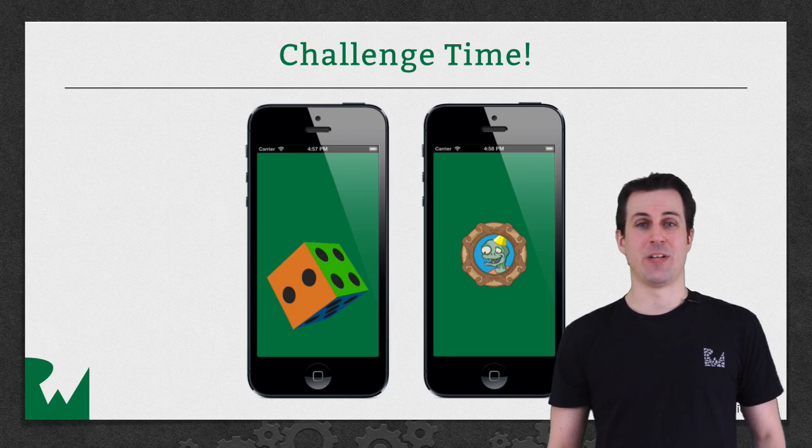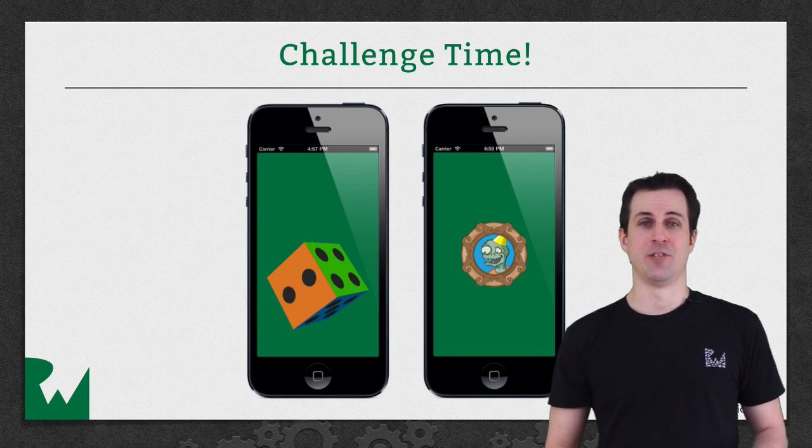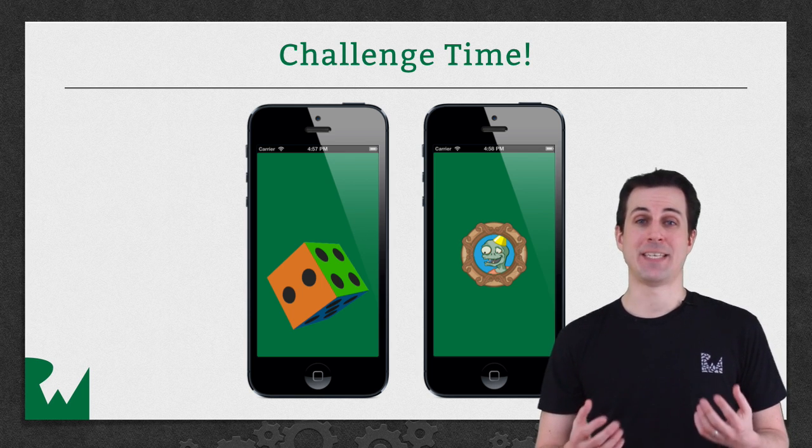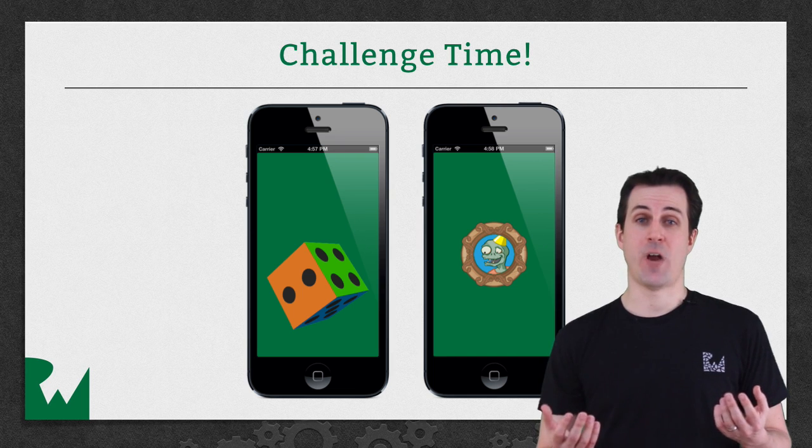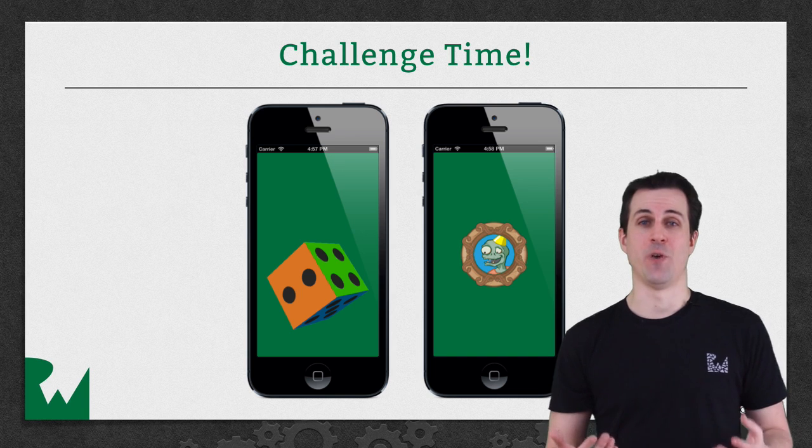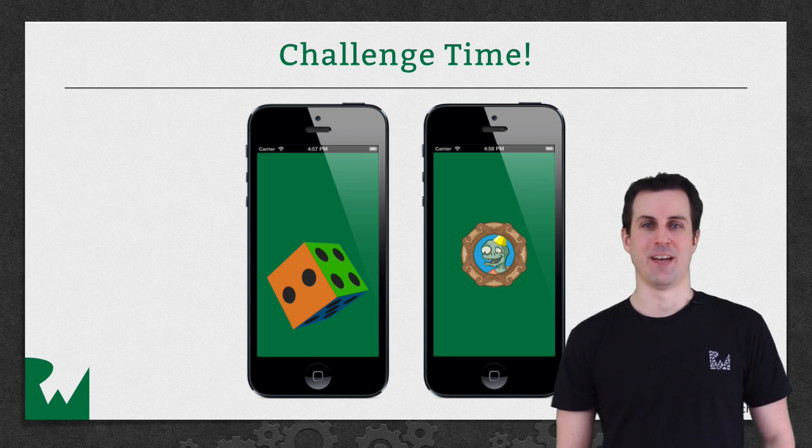Alright, that's it for this video tutorial, and as always, we like to leave you off with a challenge. I think you'll really enjoy this challenge. Your first job is to make a dice cube, and your second challenge is to use masking. So your fragment shader will actually take two textures at a time, so you can take a texture and mask it to a certain shape, such as inside a picture frame. I hope you enjoyed this video tutorial. Thanks for watching, and we'll see you next time.